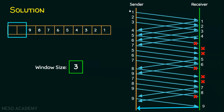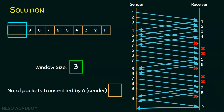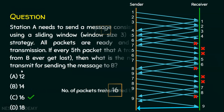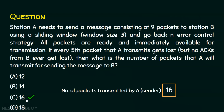The complete transmission count: packets 1, 2, 3, 4, 5 (lost), 6, 7, 8, 9, 10 (lost), 11, 12, 13, 14, 15 (lost), and 16. So the total number of packets transmitted by station A to station B is 16. The answer is Option C: 16.